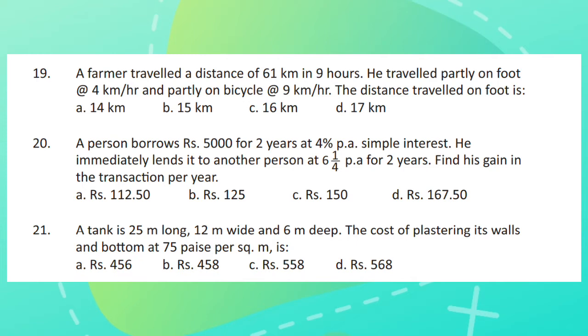Question 20. A person borrows Rs. 5,000 for 2 years at 4% per annum simple interest. He immediately lends it to another person at 6 and 1/4th per annum for 2 years. Find his gain in the transaction per year.